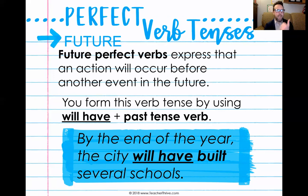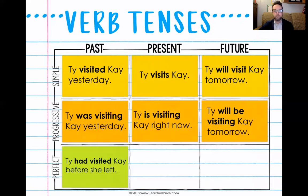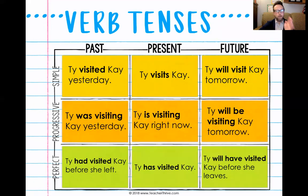To recap: past perfect is 'had' plus a past tense verb; present perfect is 'have' or 'has' plus a past tense verb; and future perfect is 'will have' plus a past tense verb. For example: 'Ty had visited K before she left' — it happened in the past before another event in the past. 'Ty has visited K' — that happened in the past but has ramifications for right now. And 'Ty will have visited K before she leaves' — before something happens in the future, this action is going to occur.